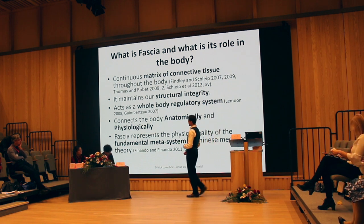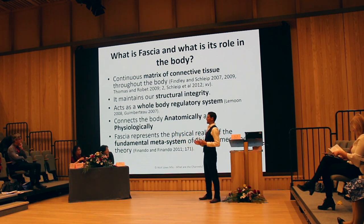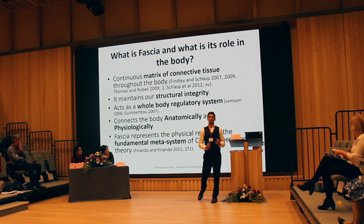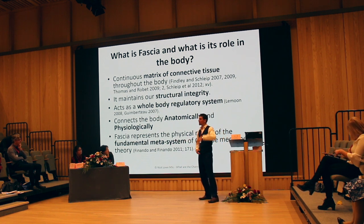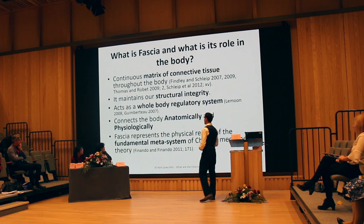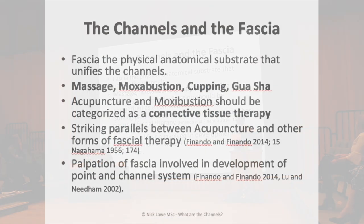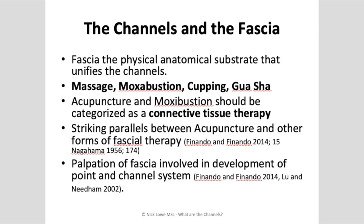We can think of the fascia as connecting the body not only anatomically but physiologically. This is really relevant to acupuncture and Chinese medicine theory, which is based on the premise that there's a fundamental meta-system — a fundamental regulatory system — that can affect all other systems and tissues. The parallels between acupuncture and other fascial therapies are very striking. Many modalities within the acupuncture umbrella — tuina, moxa, cupping, and Gua Sha — are all directly working with the connective tissue, working with the fascia. That's first and foremost what we're stimulating.